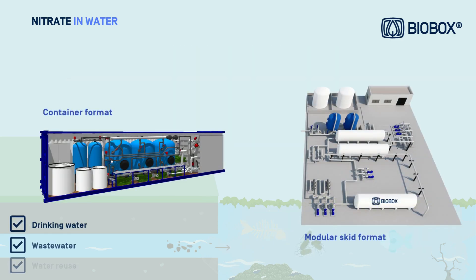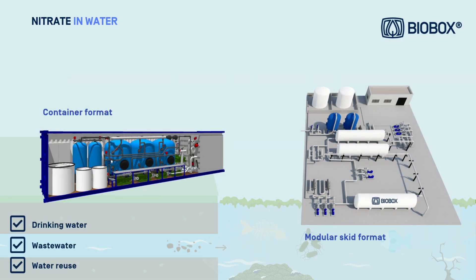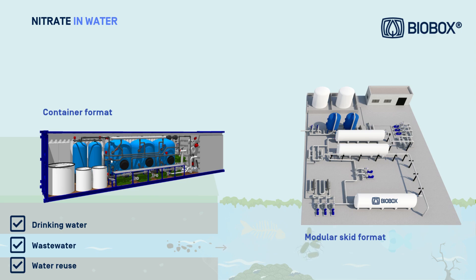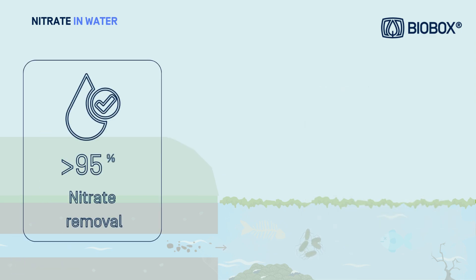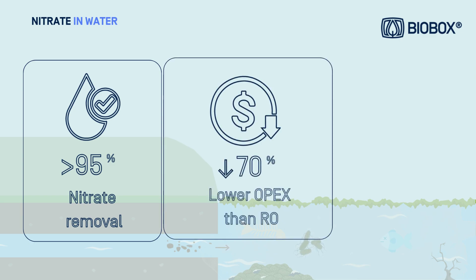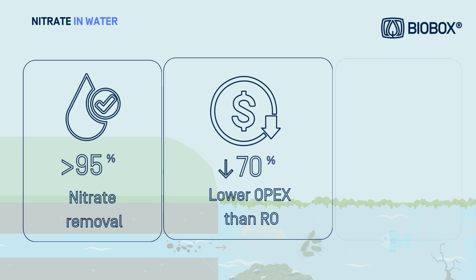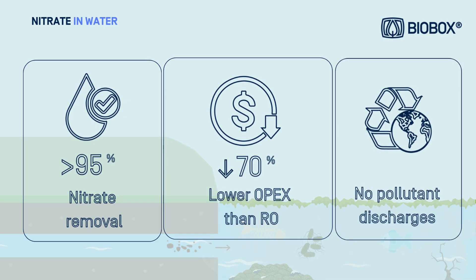We offer prefabricated water treatment plants, available in either a container or modular SCID format. Our solutions can remove up to 95% of nitrate and reduce operational costs by 70% compared to reverse osmosis. Best of all, we do this sustainably, without generating harmful discharges.